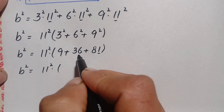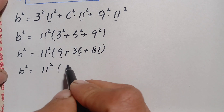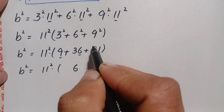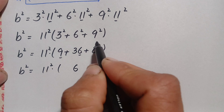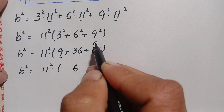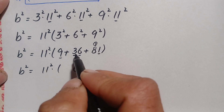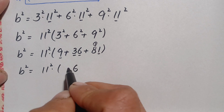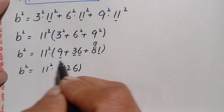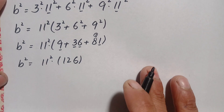Summing these three values: 9 + 36 + 81. Adding step by step: 1 + 6 = 7, 7 + 9 = 16, carry the 1; 8 + 1 = 9, 9 + 3 = 12. So the sum is 126, giving us b² = 11² × 126.